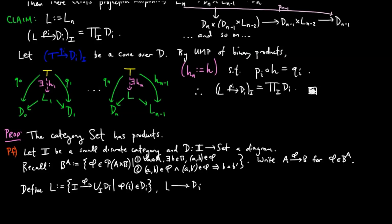And the projection maps P sub i taking phi to phi evaluated on i. We claim L along with these projection maps is the limit of D.